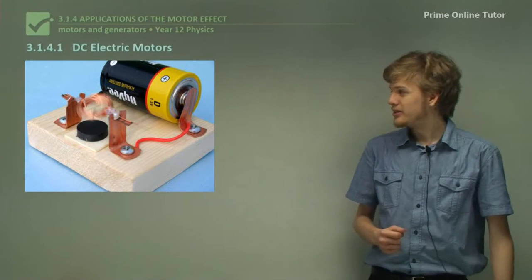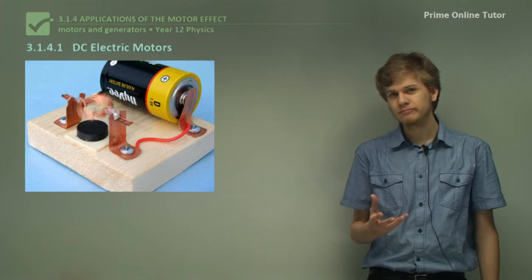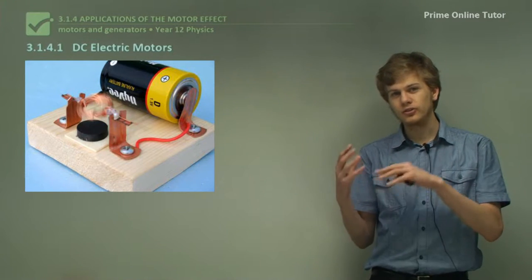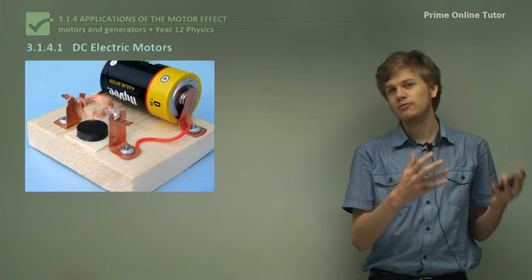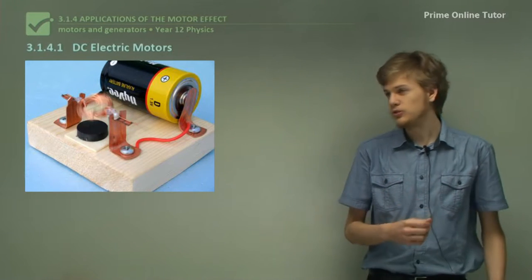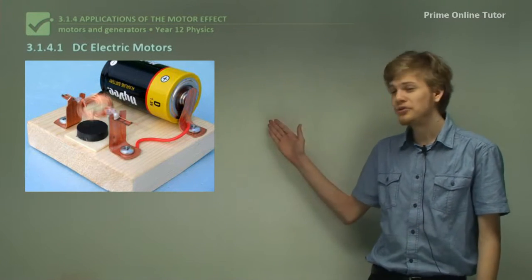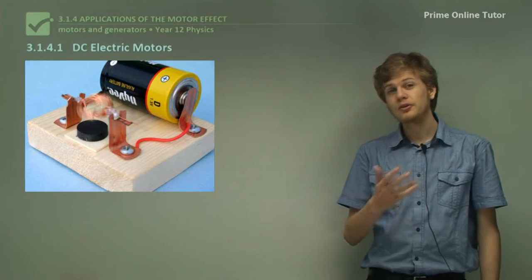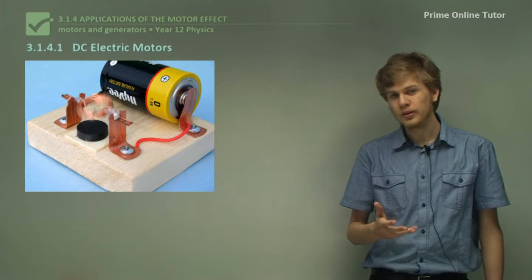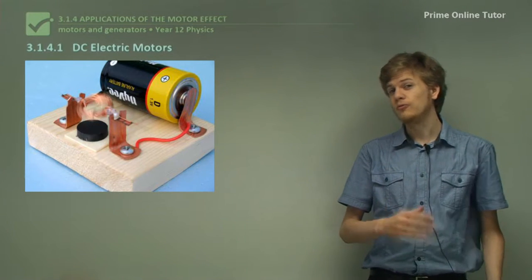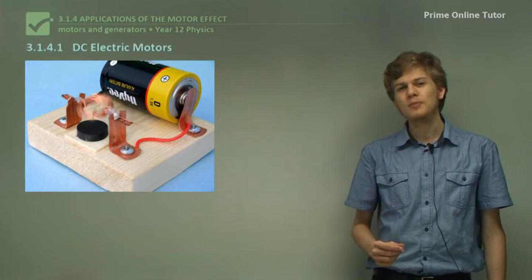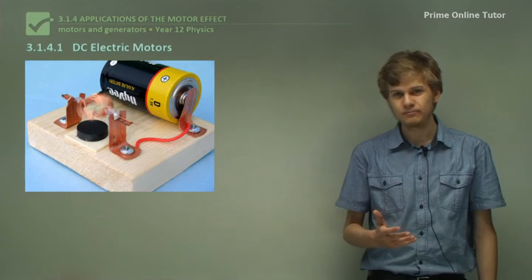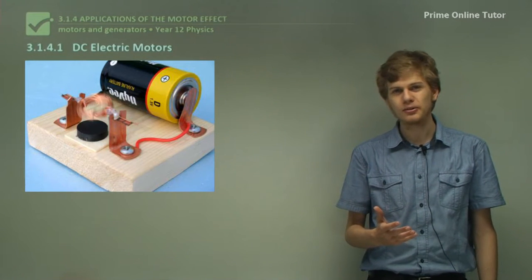DC, of course, means direct current. That's a constant steady flow, such as what might come from a battery. Later on in the module, although not for a while yet, we'll be looking at how to make electric motors with AC, alternating current.